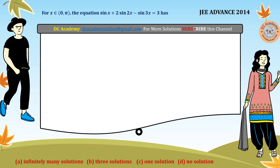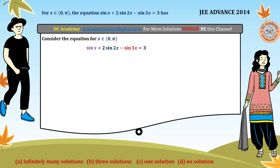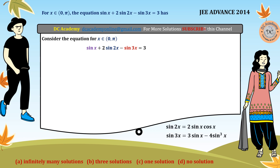To solve this equation, we first consider converting everything into sin x terms so that the sin 2x and sin 3x terms are eliminated. We use two basic formulas: sin 2x = 2 sin x cos x, and sin 3x = 3 sin x − 4 sin³x. Let's substitute these into the equation.